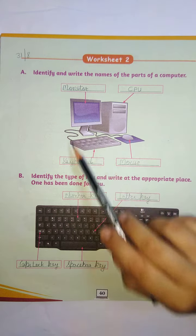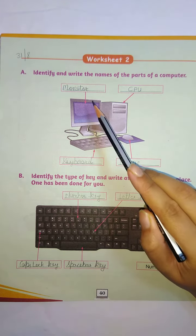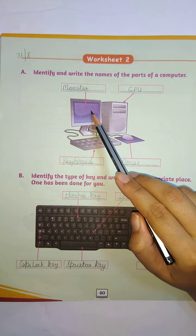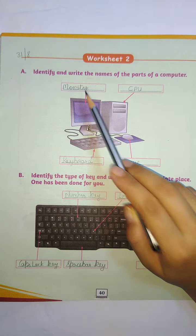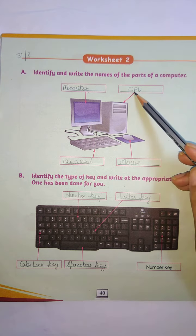So this is a computer system. Now this, this part is monitor. M O N I T O R. Monitor. This is CPU.